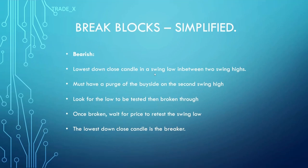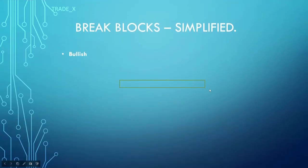The bearish is the flip of that. It's the lowest down-close candle in between two swing highs. We must have a purge of the buy side on the second swing high. We look for the low to be tested, then broken through. Once broken, wait for price to retest the swing low — the lowest down-close candle is the breaker, and that's where we'll be taking entries to move lower.